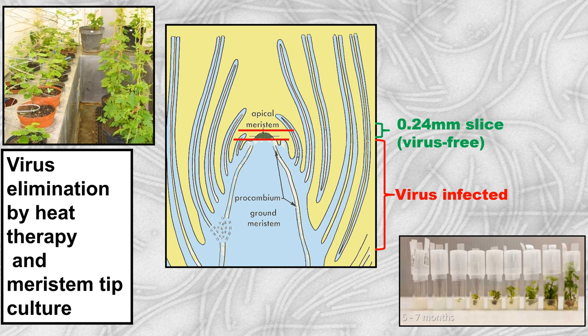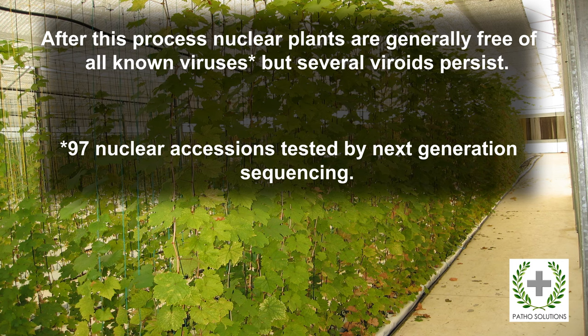The virus elimination process most commonly used in South Africa is heat therapy and meristem tip culture, where vines are grown at a very high temperature — around 38°C — for three months. This allows the grape to grow very rapidly while virus replication doesn't quite keep up with the growth, so even though the vine might be infected, the uppermost meristematic tissue is free of virus. By excising this tissue and growing it up in tissue culture, we can regenerate virus-free grapevines. In a recent study on 97 nuclear accession plants using next-generation sequencing capable of detecting all viruses and viroids, we showed that our nuclear material is essentially free of all known viruses, though several viroids still persist quite commonly.